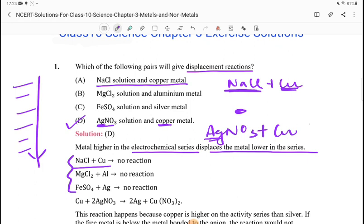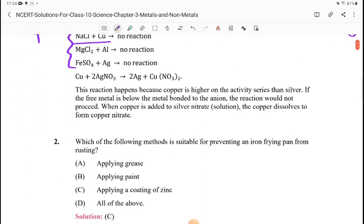The answer is D: AgNO3 and copper. Copper plus 2AgNO3 gives 2Ag plus Cu(NO3)2. This reaction happens because copper is higher in the activity series than silver. If the free metal is below the metal bonded to the anion, the reaction would not proceed. When copper is added to silver nitrate, the copper dissolves to form copper nitrate because copper is more reactive than silver.